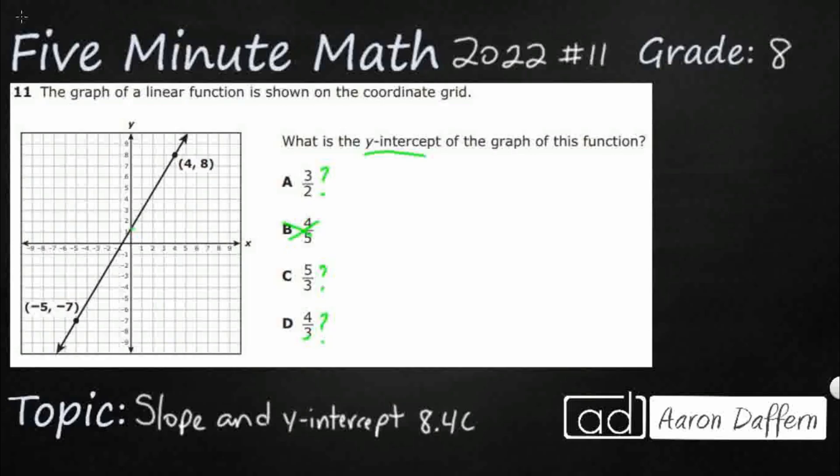Let's see if we can put this into slope-intercept form here. We're going to look for y equals mx plus b because that's what we're looking for. That's our y-intercept. So let's find the slope. The slope equals the change in y over the change in x. That's the rise over run.